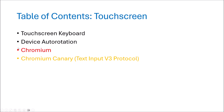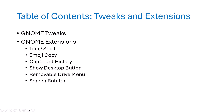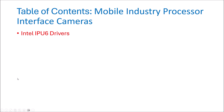Next I'll look at touchscreens — the touchscreen keyboard and device auto-rotation. Then I'll look at Chromium; unfortunately Chromium doesn't support the touchscreen keyboard, but this is being worked on, so I'll also look at the Canary build. Next, GNOME tweaks and extensions — particularly useful ones I've found include tiling shell, emoji copy, clipboard history, show desktop button, removable drive menu, and screen rotator. Finally, I'll look at the webcam. Many Dell systems have a MIPI camera with an Intel IPU6 driver that's experimental — it's being developed by Linux kernel developers but isn't included in the current kernel because it's not stable, so you can install an experimental kernel and the camera may or may not work.